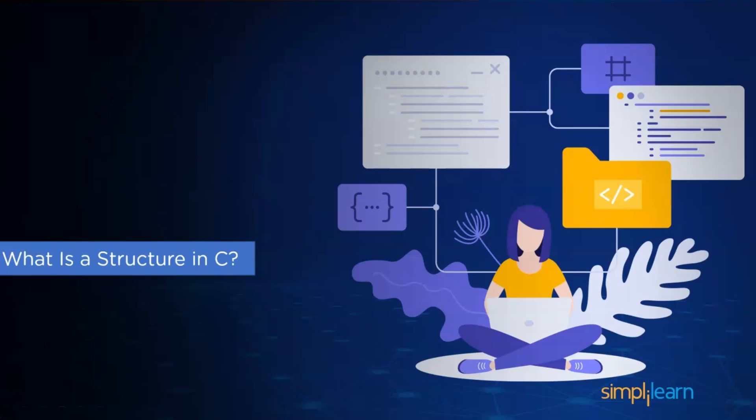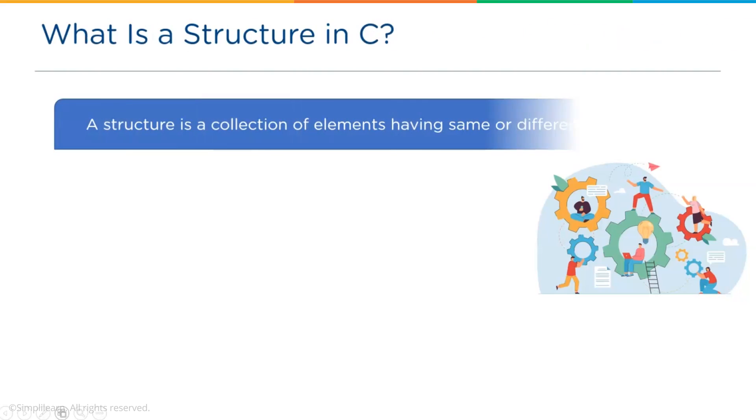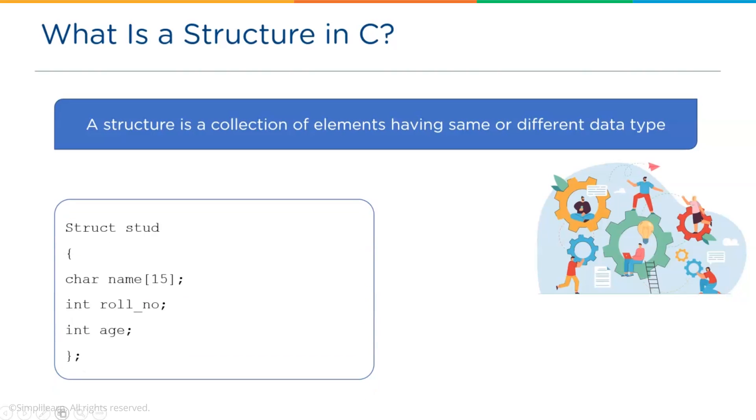Now let's begin by understanding what a structure is in C. As we all know, array is a collection of elements of the same data type. Similarly, a structure is a collection of elements with the same or different data types. For example, unlike an array, a structure can have members of different data types like int, float, char, etc.